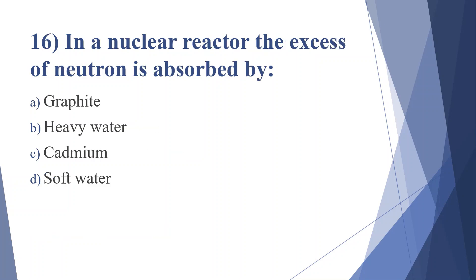Sixteenth question: in a nuclear reactor, the excess of neutrons is absorbed by — option A: graphite, option B: heavy water, option C: cadmium, option D: soft water. Answer is option C, cadmium.